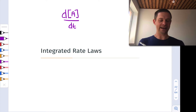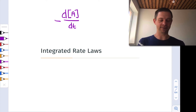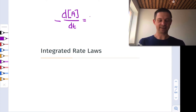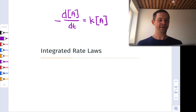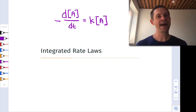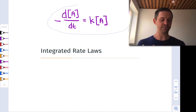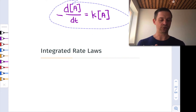dA/dt — let's throw a negative sign out front, thinking about A as a reactant. A derivative on the left-hand side and some expression involving the concentration of A on the right-hand side. This is a differential equation, and that might be interesting mathematically, but experimentally it's not super helpful. It's inconvenient to measure reaction rates.